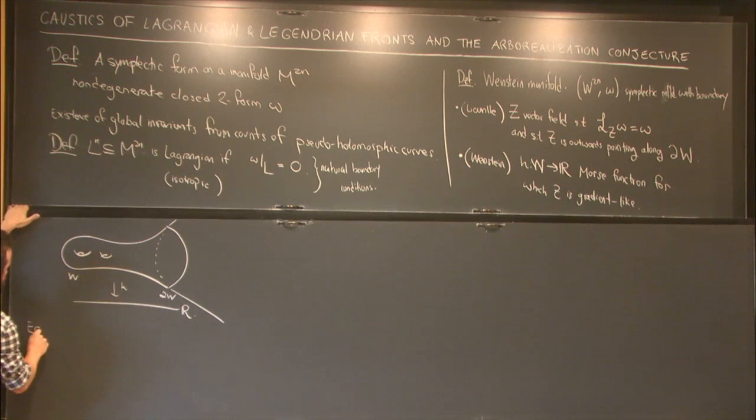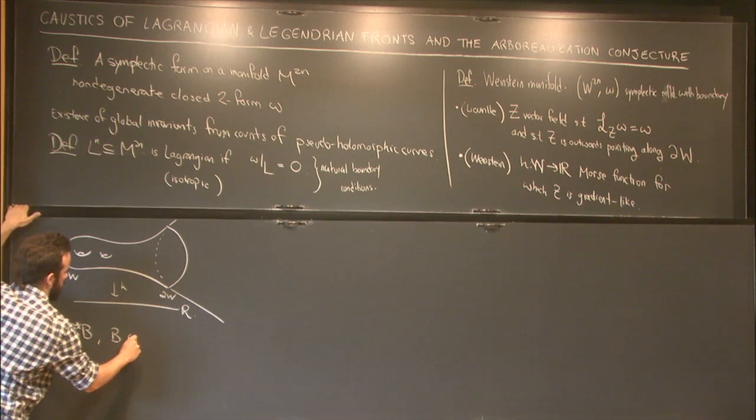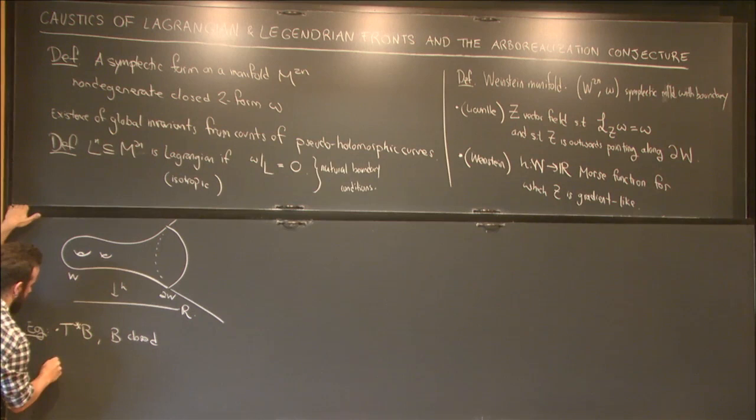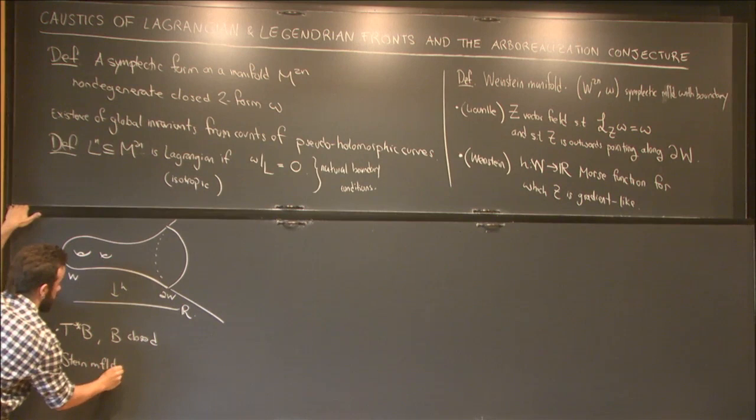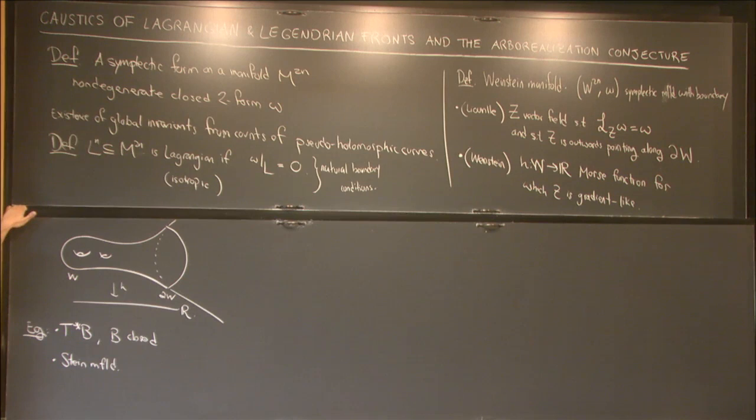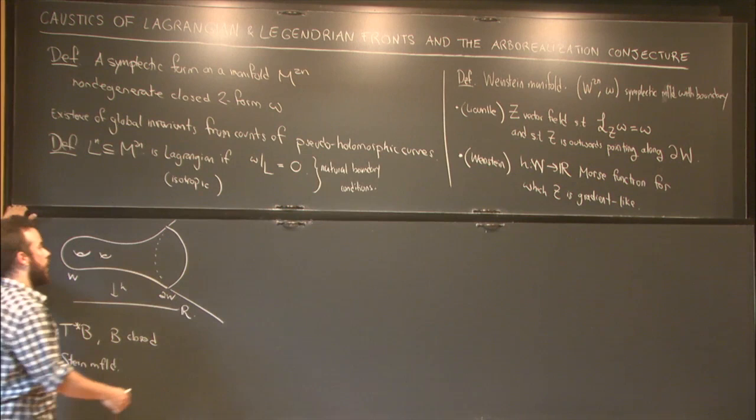Examples that we should keep in mind are the cotangent bundle of any compact closed manifold, or any Stein manifold. Any affine complex variety has an underlying Weinstein structure if I forget about the integrability of the complex structure. So these are an important class of examples that symplectic topologists care about.